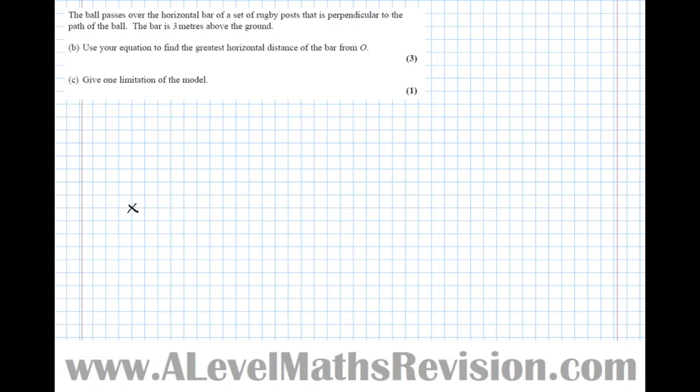So we've got the origin here and we're kicking the ball like that as we saw before. So that matches the quadratic we saw before. And we've got a rugby post here where the bar, we're looking at this from the side, where the bar is there and that is 3 metres high.